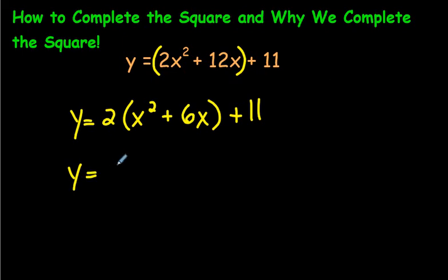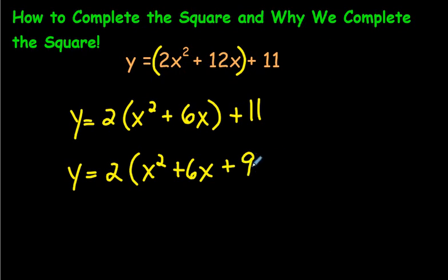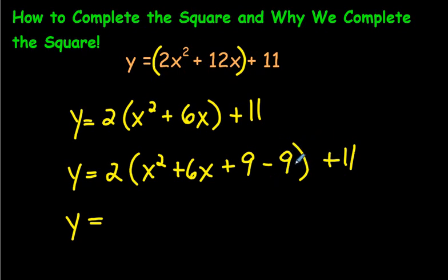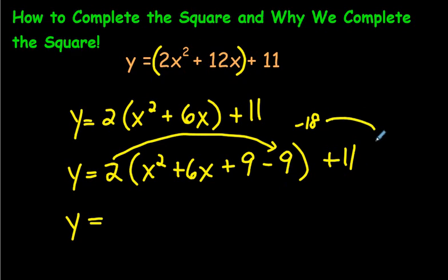What we're going to do now is create a perfect square trinomial. Take half of the middle term — half of 6 is 3, and 3 times 3 is 9. Don't forget, if you put a plus 9 here, you have to put a minus 9 just to balance things out, and then over here on the end we still have that plus 11. This one's a little trickier. This negative 9 needs to escape the brackets, but it can't just go with the 11 — you can't just do 11 minus 9 to get 2. This 2 in front has to multiply: 2 times negative 9 is negative 18. That is the number that comes outside.